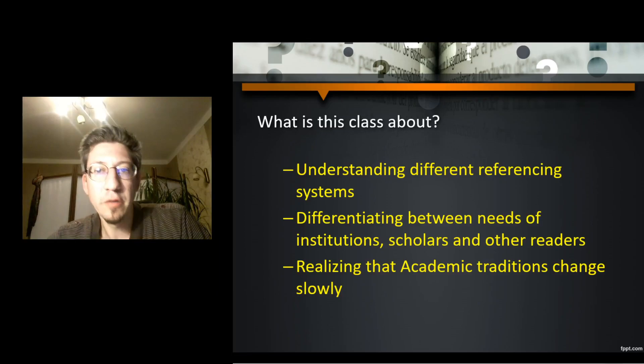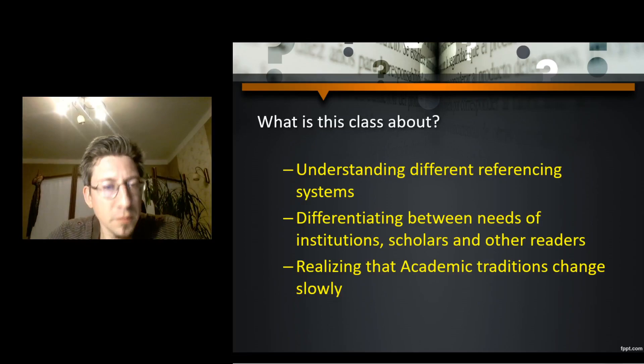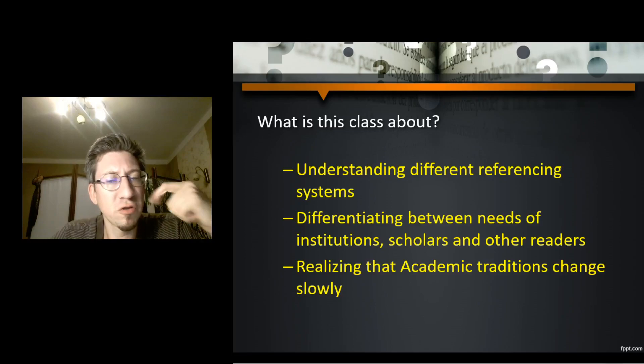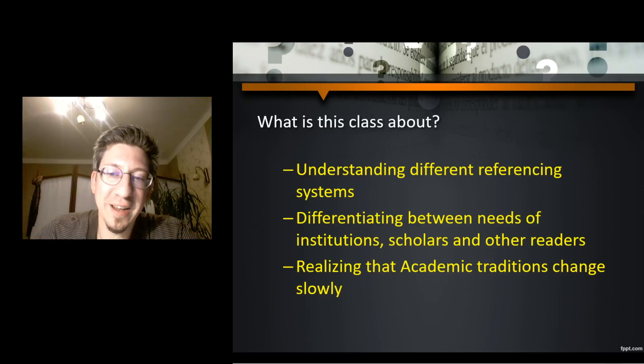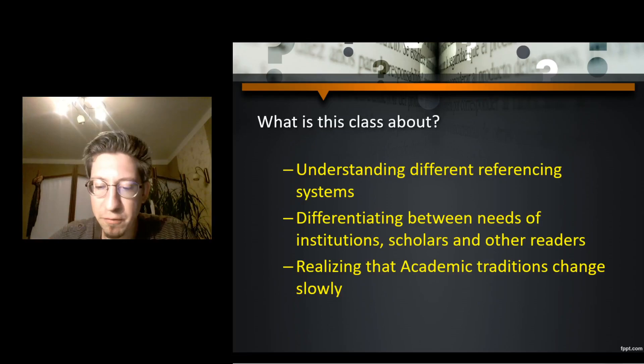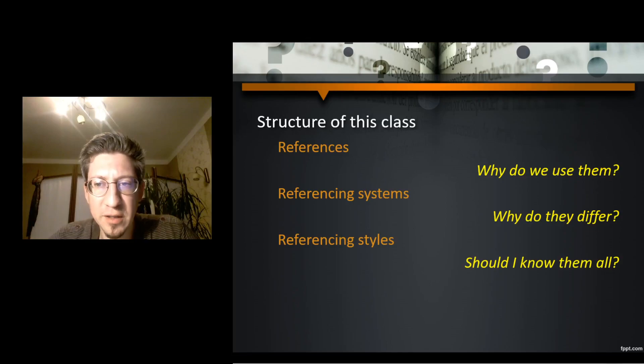So, what is this class going to be about? It's going to be understanding different referencing systems, understanding and differentiating between the needs of institutions, scholars and other readers when assessing these referencing systems. And the final realization is that academic traditions change slowly, and that's why most of us are still stuck with impractical referencing systems. First I'm going to talk about the references themselves, then about the systems and then about the styles.